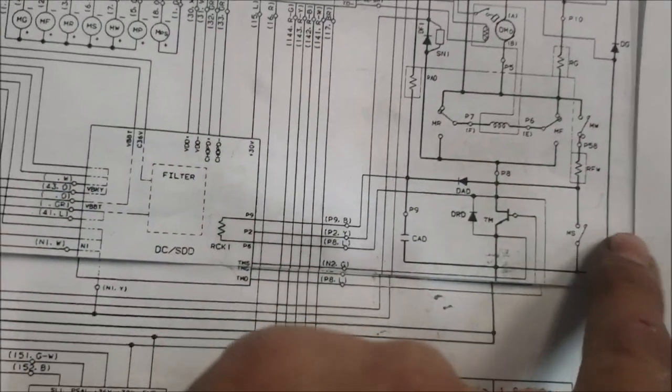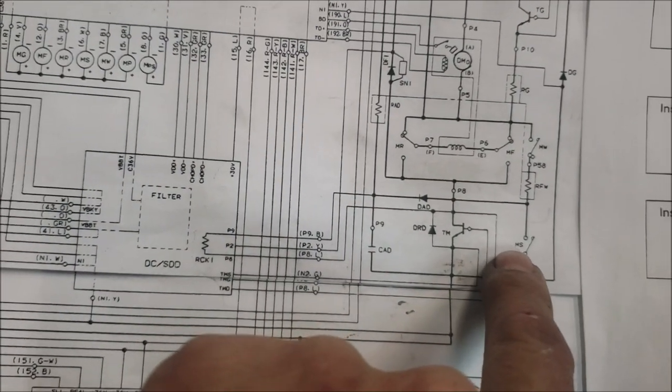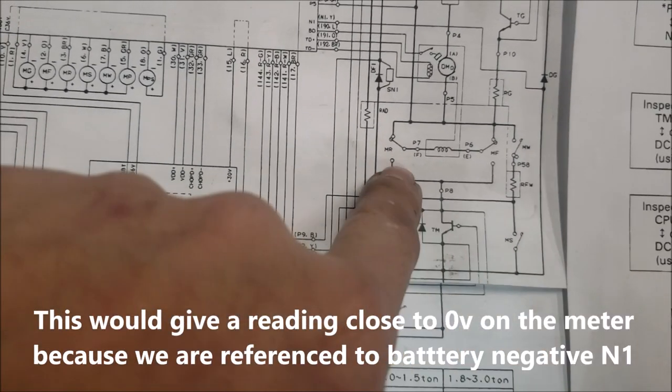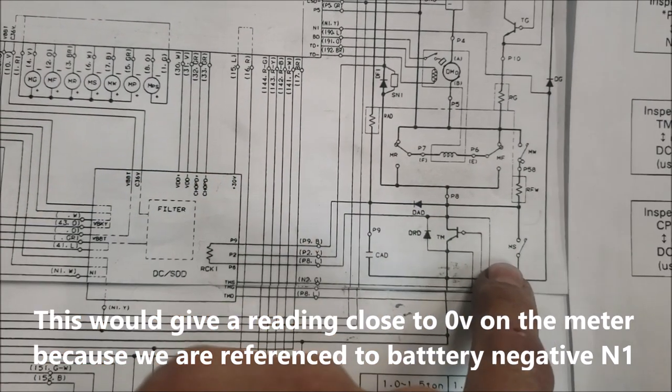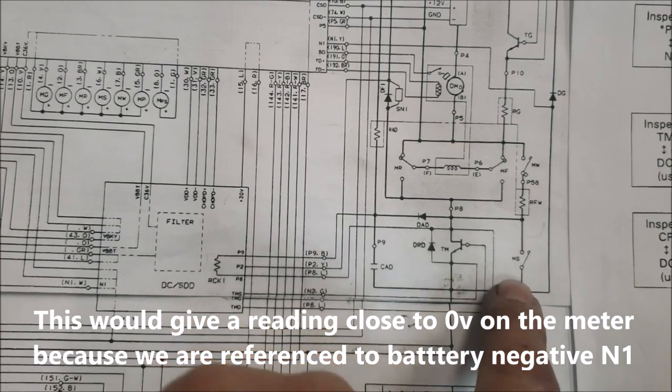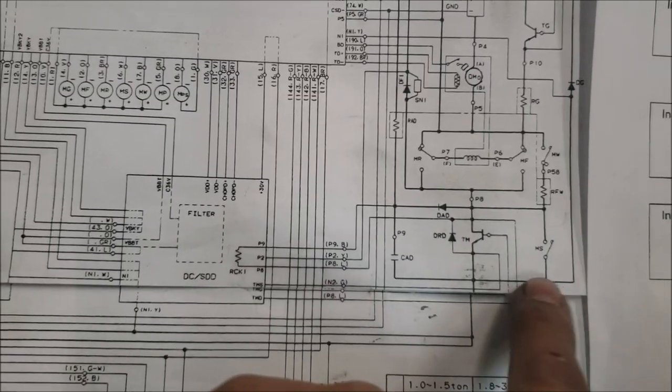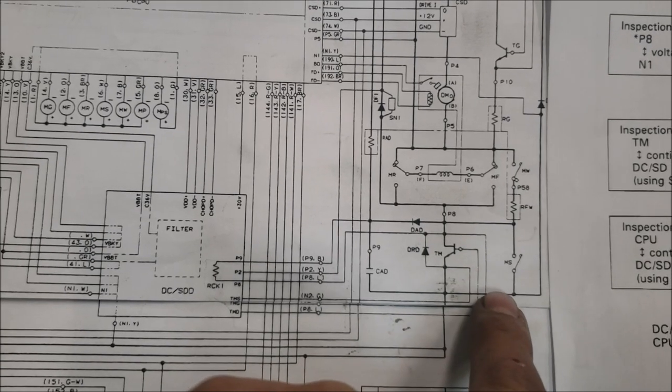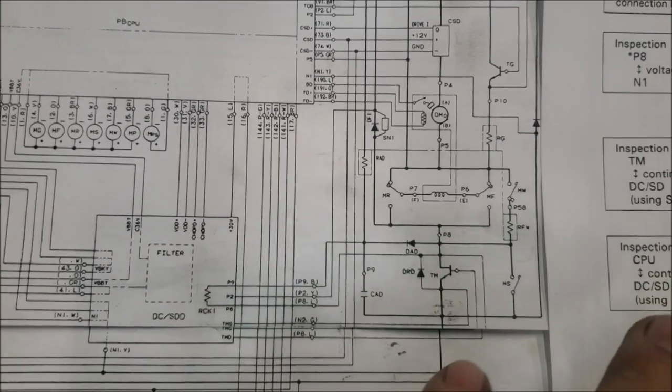The next thing to check is the MS contactor. Looking at the diagram, the MS contactor is here. What it's saying is to check if it's welded. p8 is right here, and if that MS contactor is welded, it's gonna be a direct path to the negative, which would give you a lower voltage, basically a negative on p8.